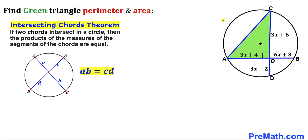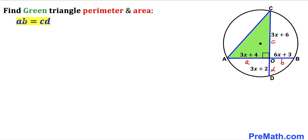Let's revert our attention back to this given problem. We have two chords AB and CD that intersect each other at point O. Labeling the segments as lowercase a, b, c, and d, and filling in the equation a times b equals c times d: in our case, (3x + 4)(6x + 3) = (3x + 6)(3x + 2).